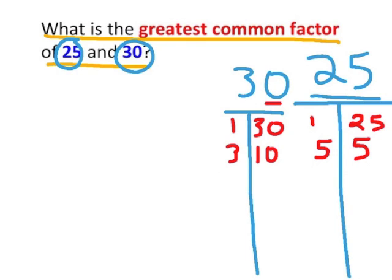Are there any other factors of 30? Any other numbers we can multiply together to get 30? We know that 5 times 6 is equivalent to 30. So we have found all of our factors of both 25 and 30. Now we are simply going to list them in order from least to greatest.